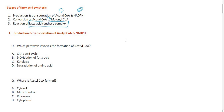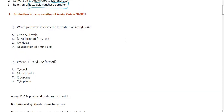First, regarding the production of acetyl-CoA — which pathways produce acetyl-CoA? All of the following: the citric acid cycle (TCA cycle), beta-oxidation of fatty acids, ketolysis, and degradation of amino acids all produce acetyl-CoA.